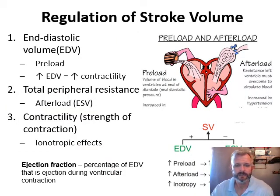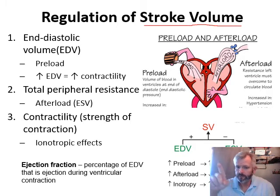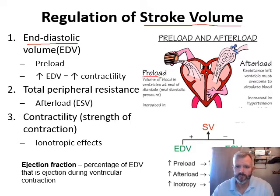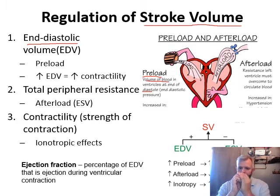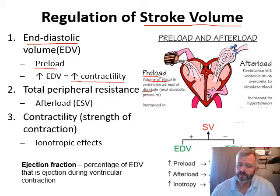Here are the factors controlling stroke volume. Stroke volume is related to how forceful the contraction is — the more forceful, the more blood we push out. One of those factors is EDV, end-diastolic volume: how much blood is in the ventricle before it contracts. This is also called the preload — the volume of blood in the ventricles at end diastole. If the ventricle is stretched more, it contracts more forcefully. More stretch means more contractility, which increases stroke volume and therefore cardiac output.